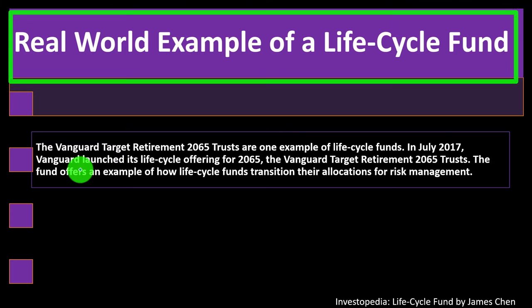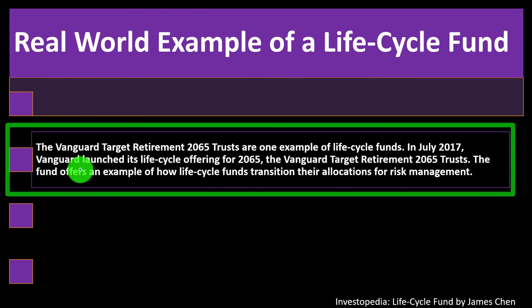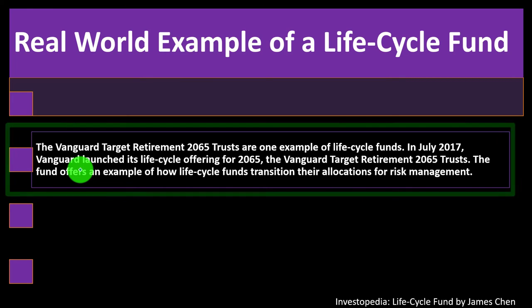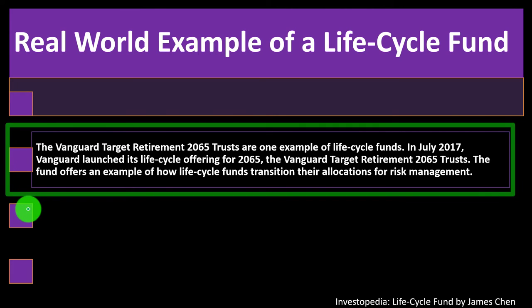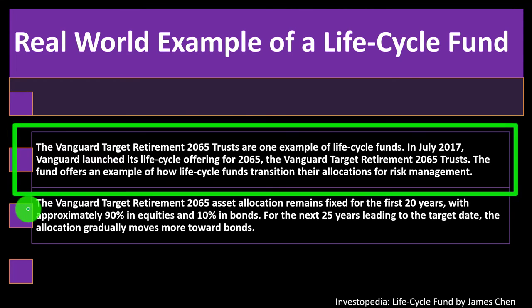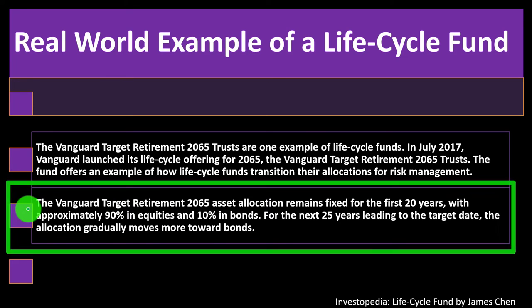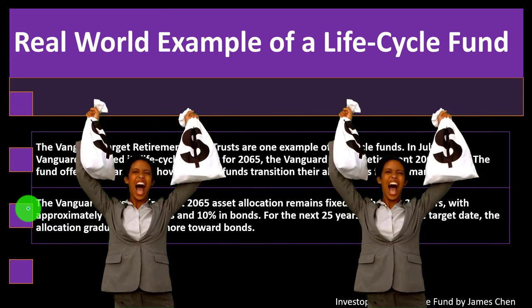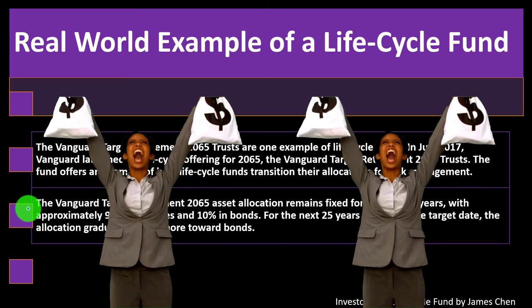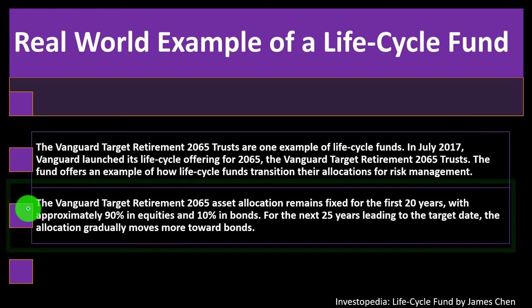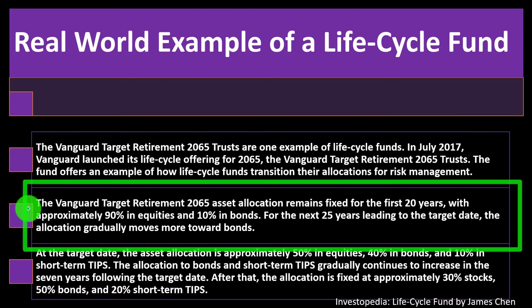Real-world example of a life cycle fund: the Vanguard Target Retirement 2065 Trust is one example. In July 2017, Vanguard launched its life cycle offering for 2065. The fund offers an example of how life cycle funds translate their allocations for risk management. The Vanguard Target Retirement 2065 asset allocation remains fixed for the first 20 years with approximately 90% in equities and 10% in bonds — more on the risk side with more money in equities — then for the next 25 years leading to the target date the allocation gradually moves towards bonds.